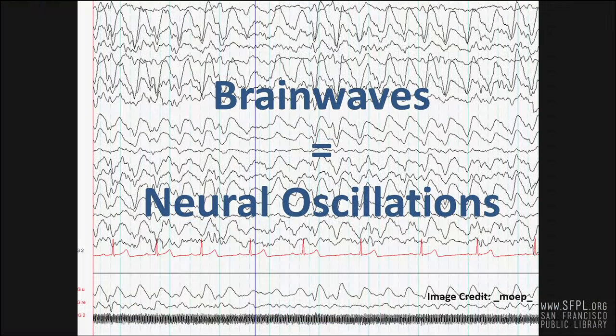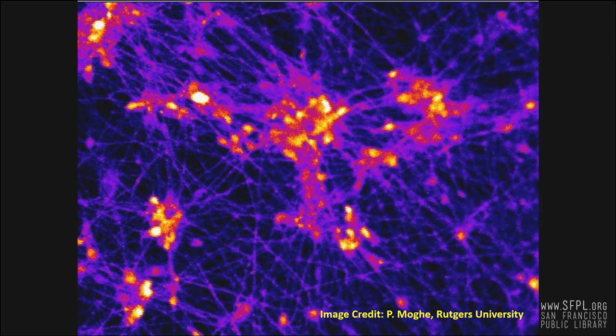Making brainwaves. Brainwaves are also known as neural oscillations. The brain is an electrochemical organ, and that means that electricity is produced by the chemical changes in the brain at the neuron level.